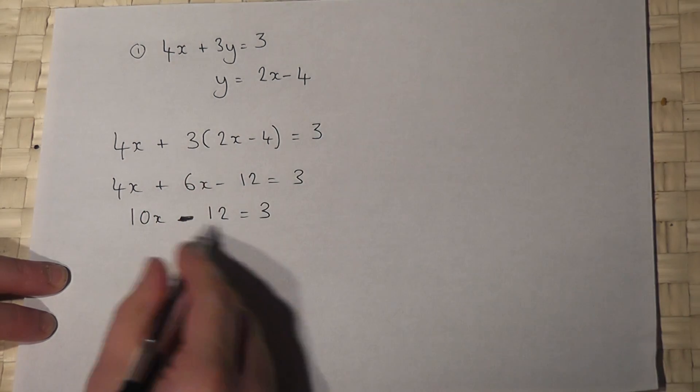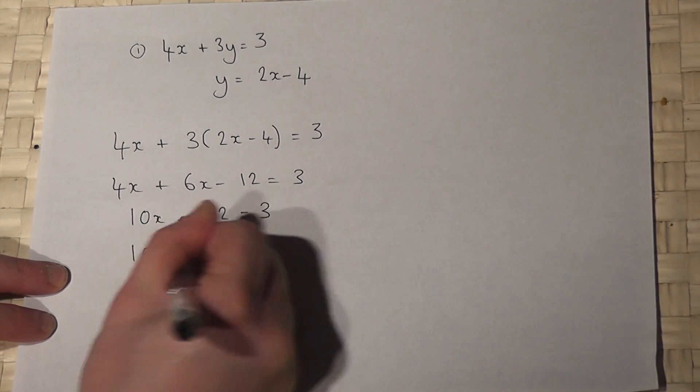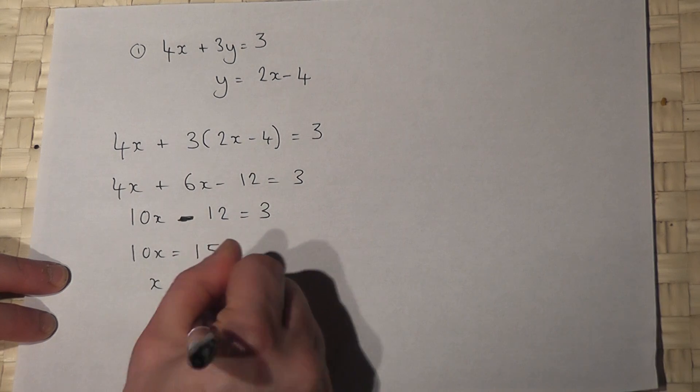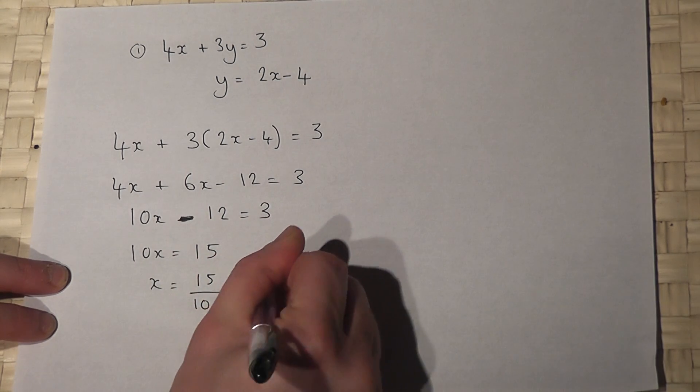And solve. So I add 12 to get 10x equals 15, divide by 10, x is 15 over 10, which is 1.5.